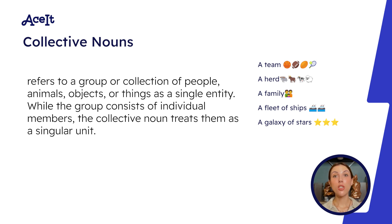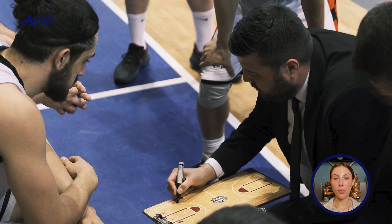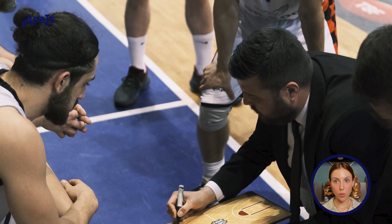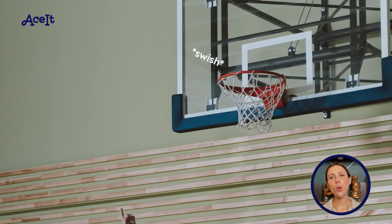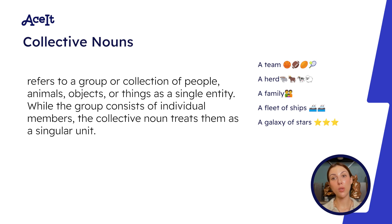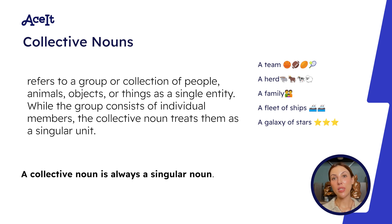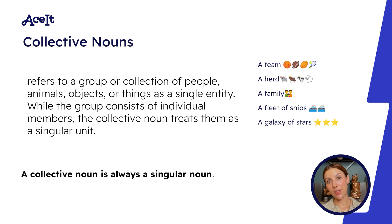For example, a college basketball team is a collective noun because it represents a single, unified entity made up of multiple individuals — the players, the coaches, the support staff — but they're all working together towards a common goal: success on the court. And while there are many people involved, they function as one singular, cohesive unit. So our first rule for today is that a collective noun is always a singular noun.